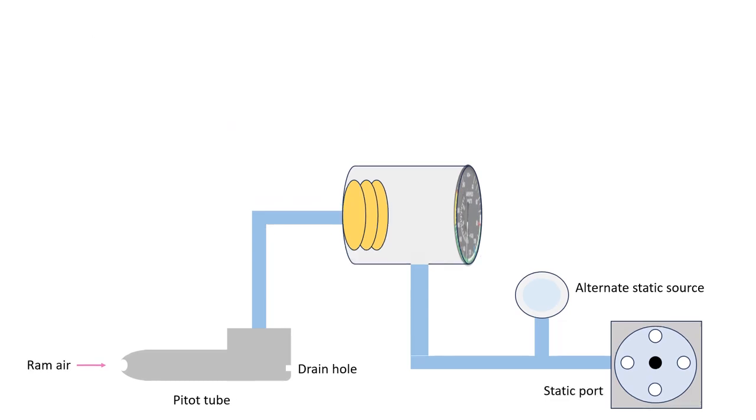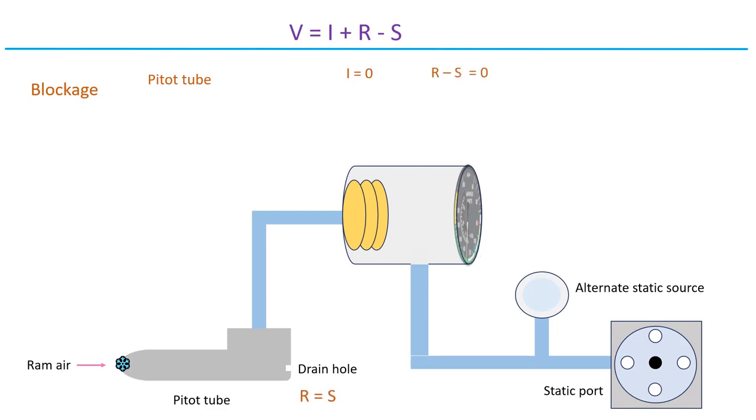Now, let's dig into what happens to the airspeed if any of these components become clogged. If you fly into moist air with temperatures below freezing without turning on your pitot heat, your pitot tube might get blocked by the ice accumulated on it. In such a scenario, there won't be any impact pressure, making I equals to zero. Assuming the drain hole stays open, pressure will keep escaping until the pressure in pitot tube matches the surrounding ambient pressure. This is because pressure, like water, flows from high to low until it's balanced on both sides.